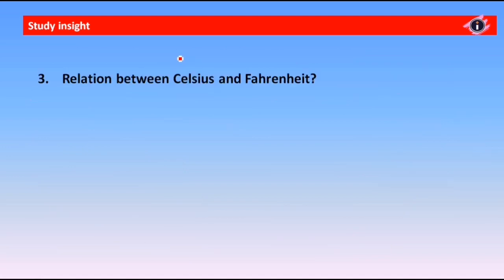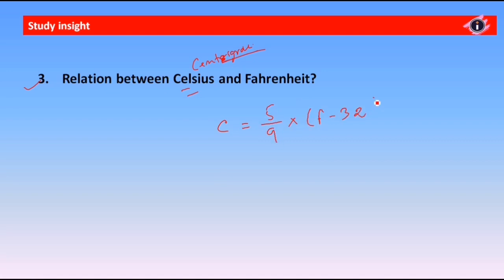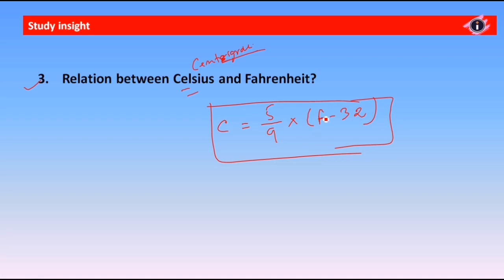Question number three: the relation between Celsius and Fahrenheit. Celsius and Fahrenheit — the relation is C equals 5 by 9 into (F minus 32). This is very important. Here F is the Fahrenheit scale and C is the Celsius scale.